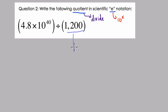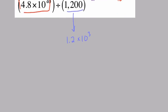1200, what's that? Well, that's 1.2 times 10 to the third. And we're dividing 4.8 times 10 to the 40th by 1.2 times 10 to the third. So I can write that as a fraction, and that's going to make my life a lot easier here. 4.8 times 10 to the 40th divided by 1.2 times 10 to the third.